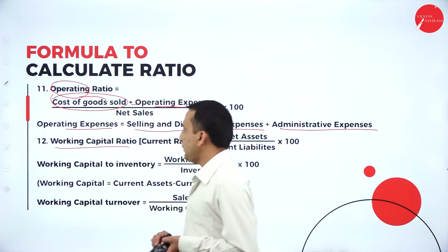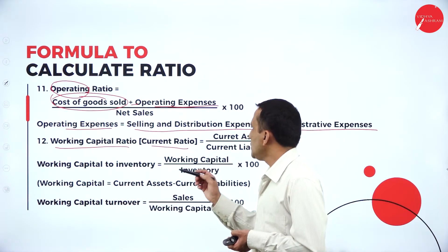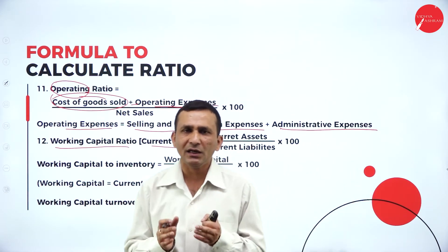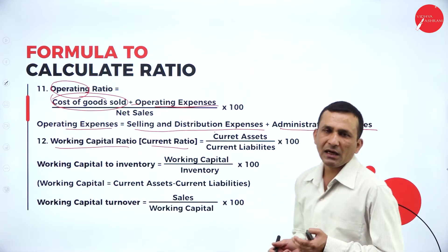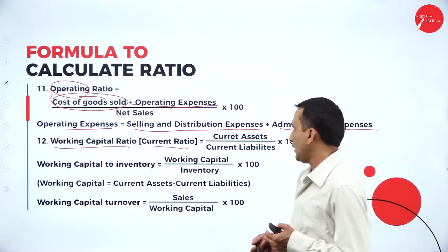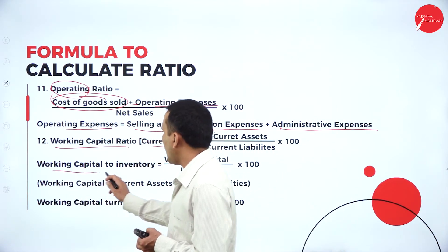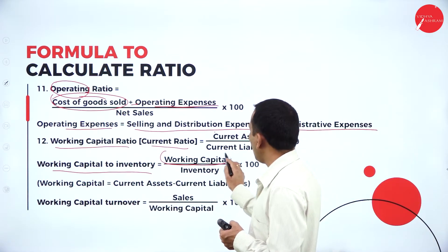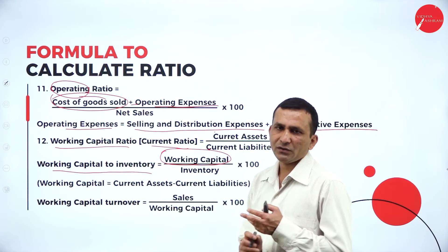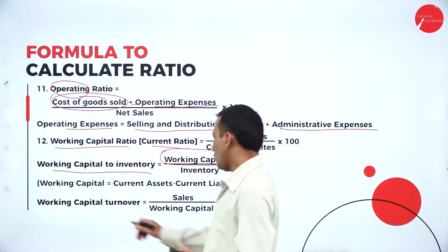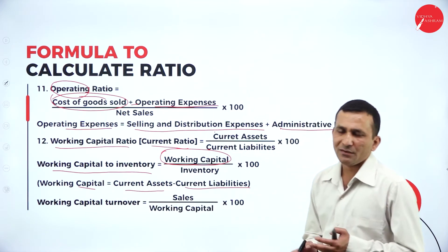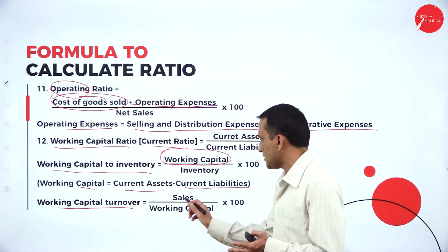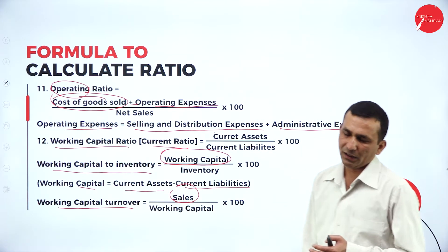Working capital ratio or current ratio is current assets divided by current liabilities. Working capital equals current assets minus current liabilities. For working capital to inventory, we compare working capital divided by inventory — there are two: opening and closing. Working capital turnover ratio is sales divided by available working capital into 100.